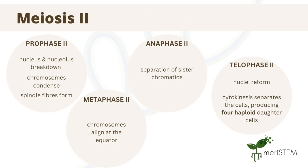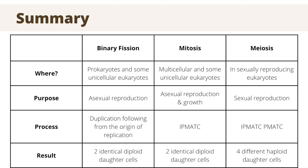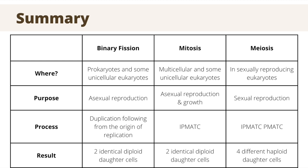Here is the process of meiosis 2. The main thing to note here is that the result of this process is four haploid daughter cells, as previously discussed. This table presented here nicely summarises everything we learnt today, and is a good representation of the differences between these three types of cell division.